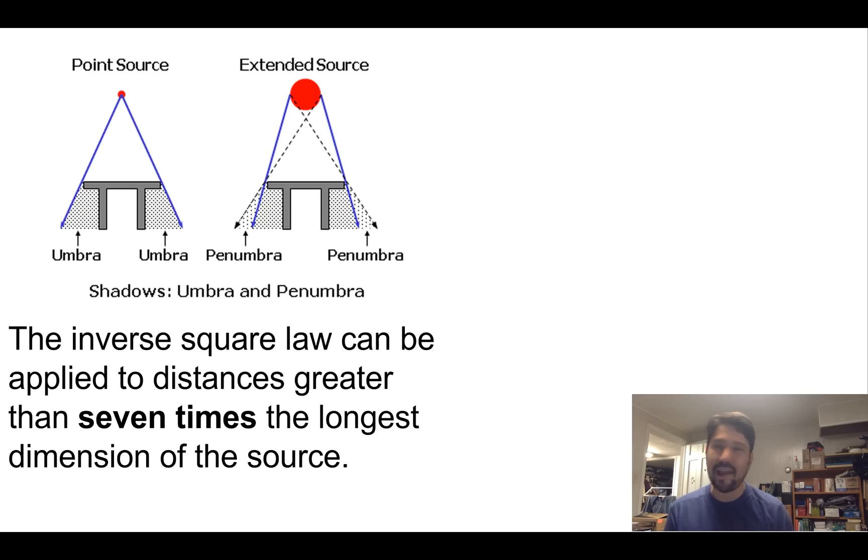So the rule of thumb we use for that is we're going to say that as long as you're seven times away, seven times the longest dimension of the source away, you can treat it as a point source. So if it's a two foot long fluorescent lamp, as long as you're 14 feet away or more, you can treat it as a point source.